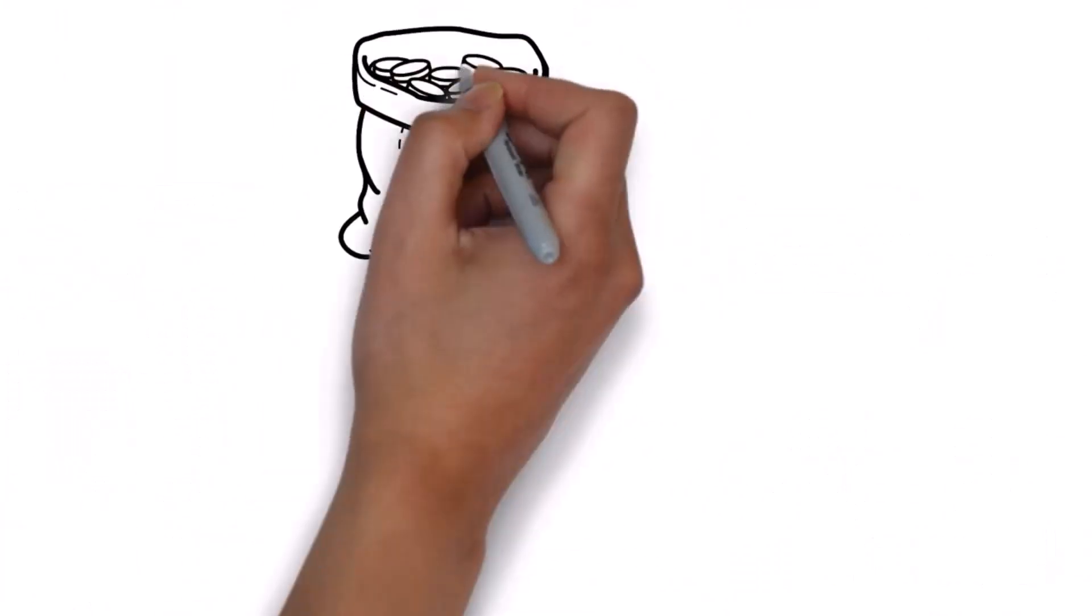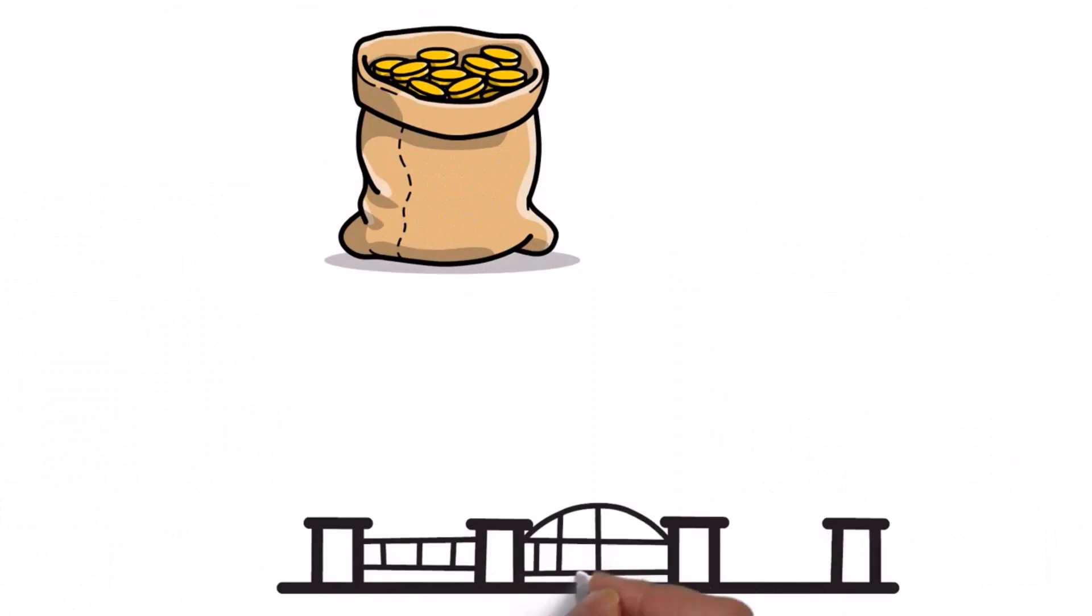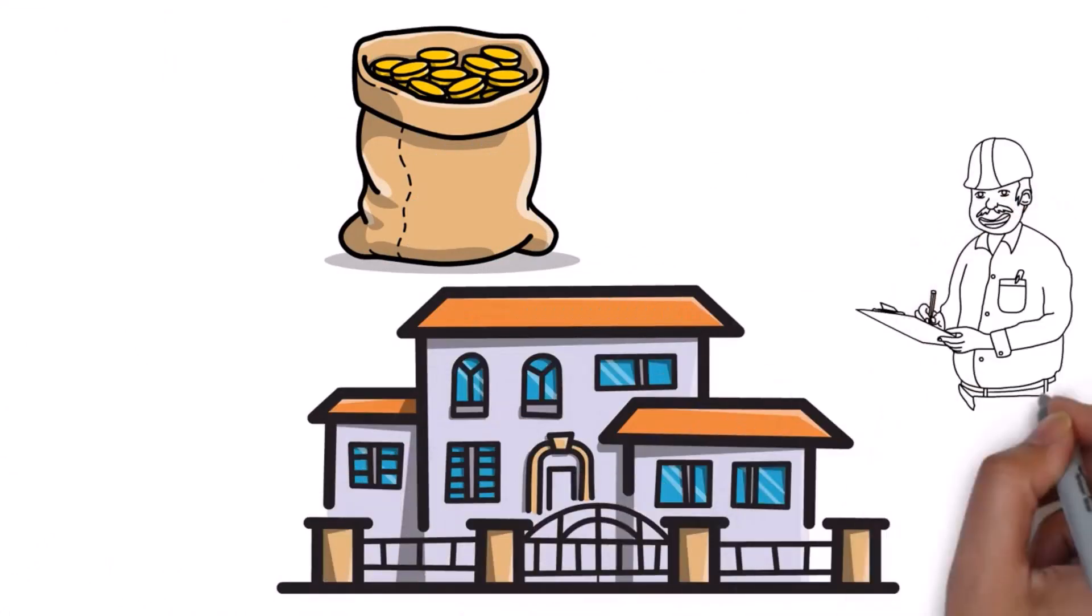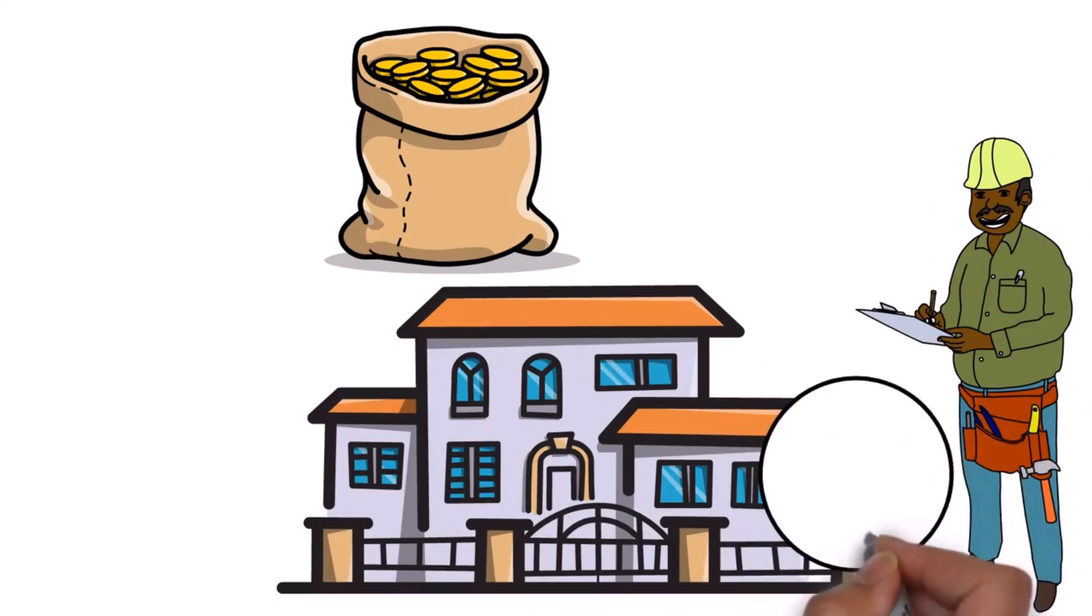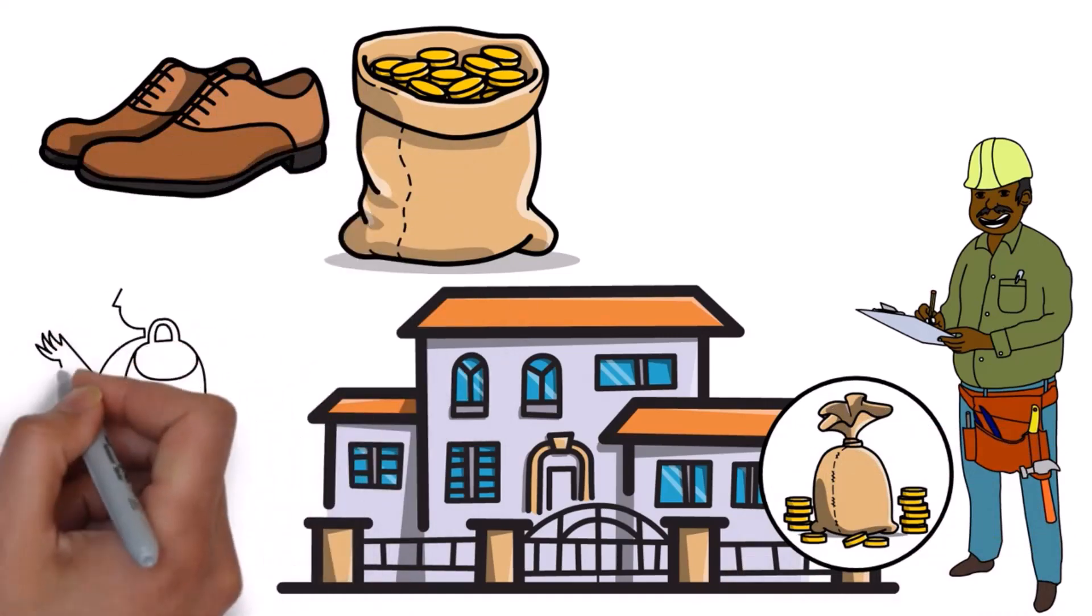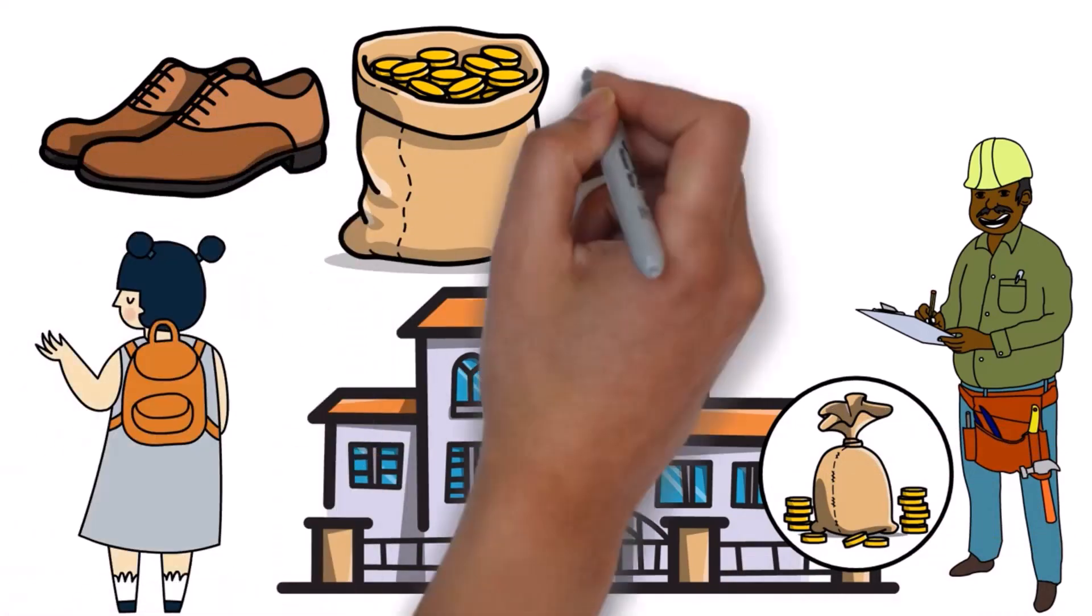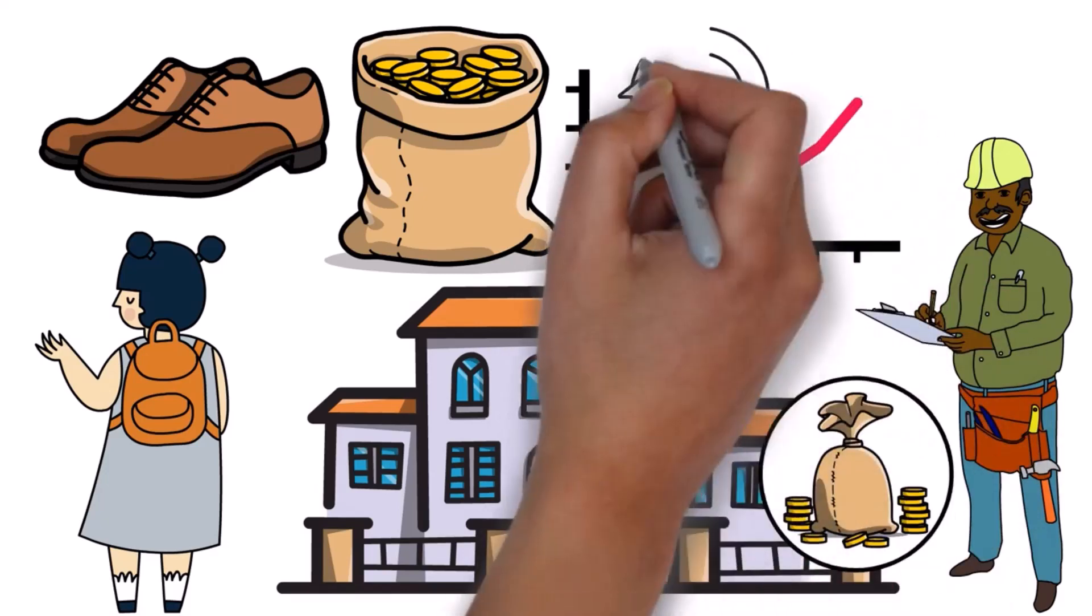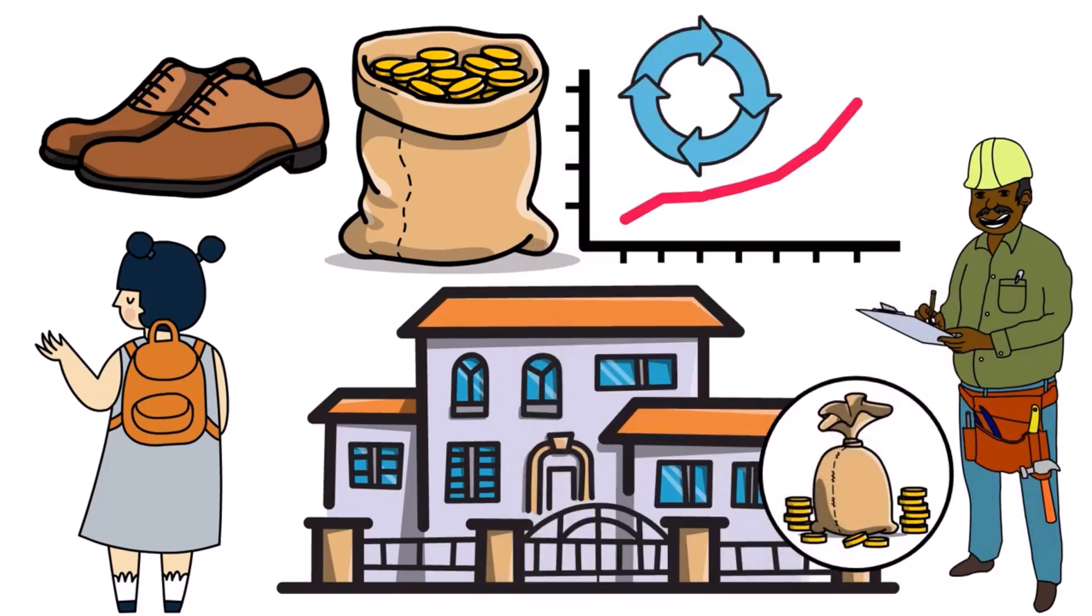For instance, someone might borrow money to fix their roof or build an addition to their house. This meant that workers like construction workers and roof builders suddenly had more money coming in. They, in turn, spent that money on things like new shoes or bags for their spouses. This increased spending created income for others in the town and the money circulated throughout the local economy.